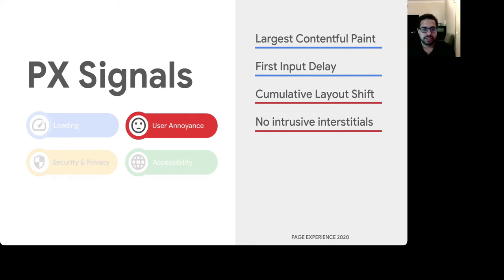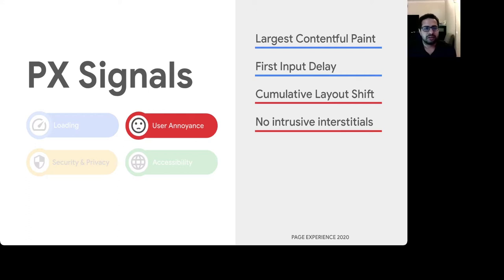No intrusive interstitials is an existing search ranking policy and an associated signal used in search that detects the presence and use of interstitials that are user-hostile. Such interstitials are often used to trick users into doing something they do not want to, preventing them from reading or interacting with the page they landed on from Google search. There are a lot of great uses of interstitials, such as ones required by the law — GDPR for instance — or an interstitial that provides updated business hours during the coronavirus pandemic. These are not affected by the signal.